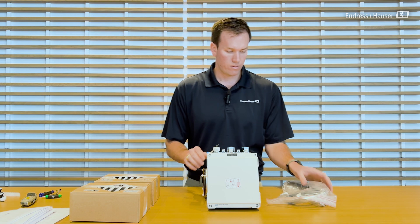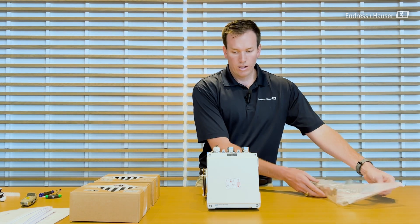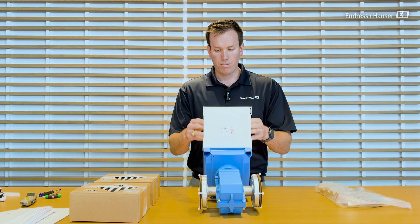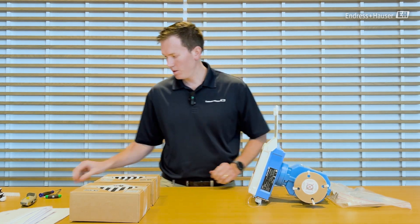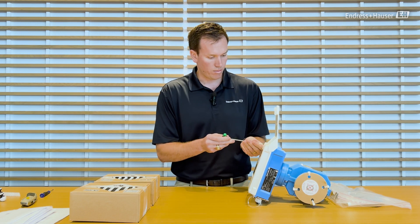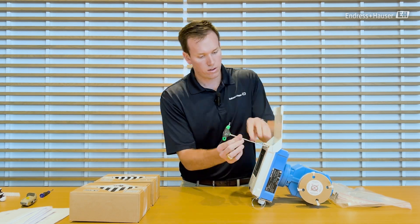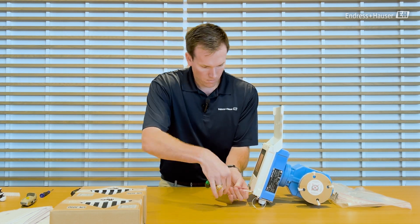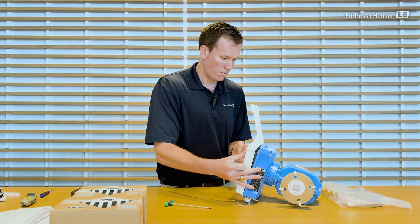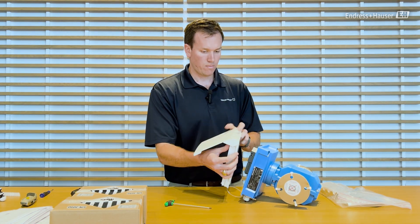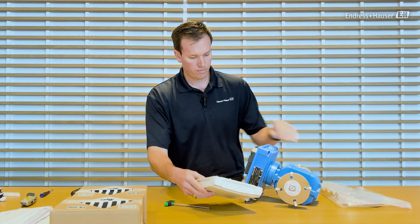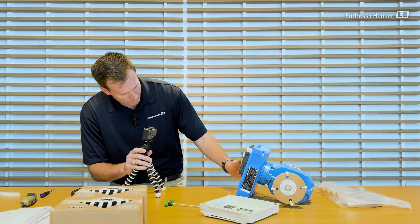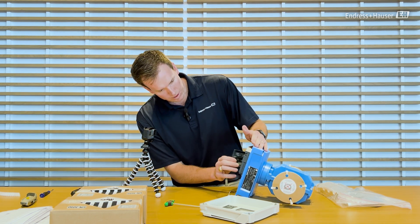So I'll start by opening up the meter so that we can set up the batteries, make sure everything is working properly. All right, once I have those screws off, the transmitter opens up like that and you can see I've got a display.